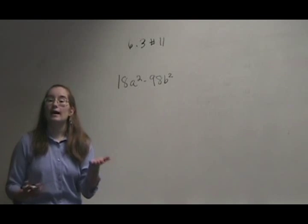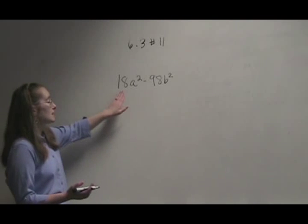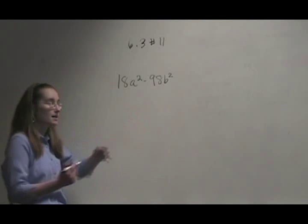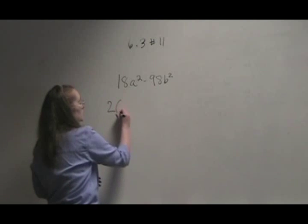Well, we look at this and we can factor something out. If we look at both 18 and 98, we can take a 2 out. So let's start there and see what we've got.